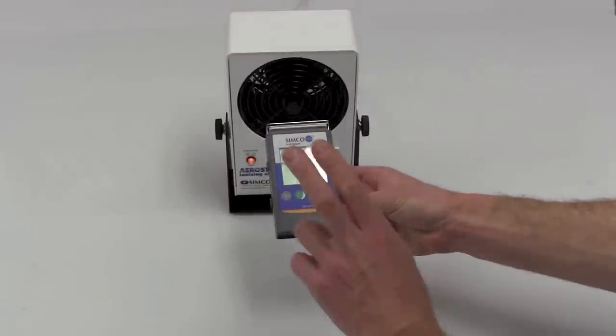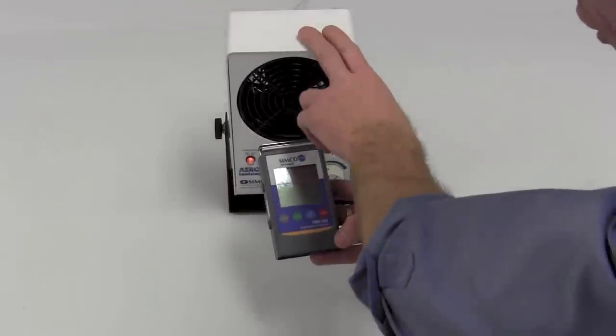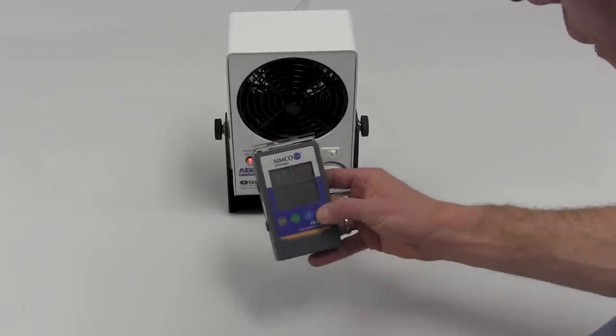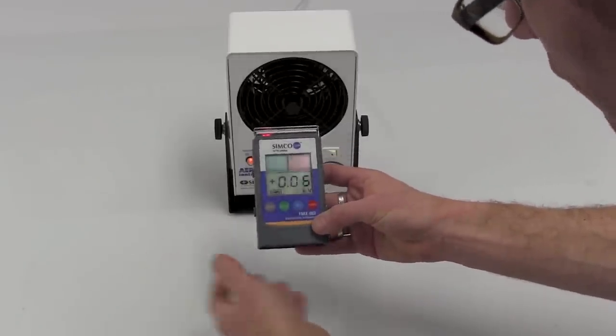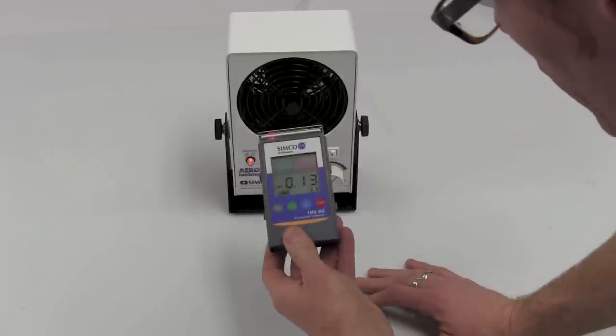So we're going to do a test of both the FMX003 and also just show it in conjunction with our air ionizer. So this will be quick. We will take the unit, fire it up. So it's 10 volts, 50 volts, plus or minus. It's just going to move around a little bit.